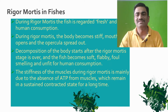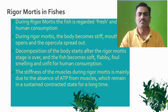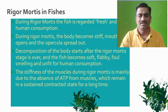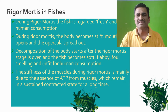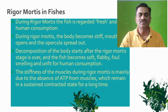If the rigor mortis stage is delayed for a longer period, then the fish is preserved and fit for human consumption. Our aim is how to prolong the rigor mortis. After rigor mortis, decomposition of the body starts rapidly and the fish becomes soft, flabby, foul-smelling and unfit for human consumption. The stiffness of the muscle during rigor mortis is mainly due to the absence of ATP from the muscles.